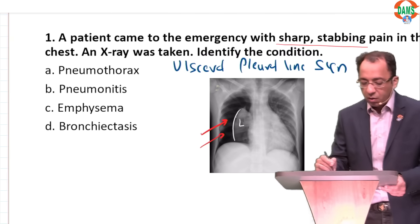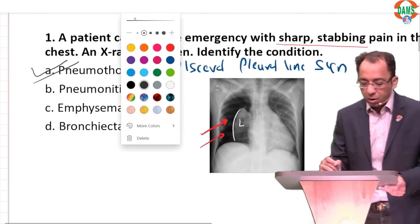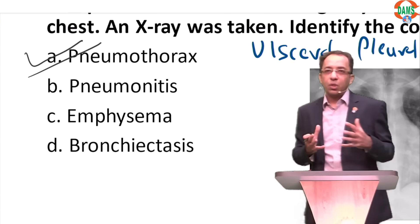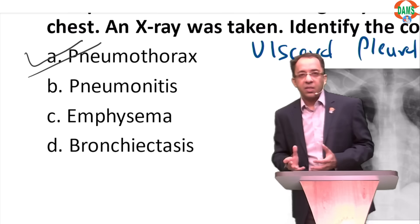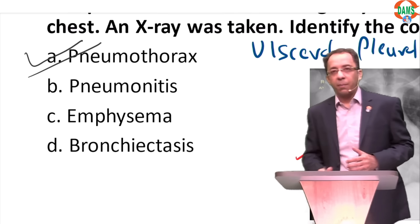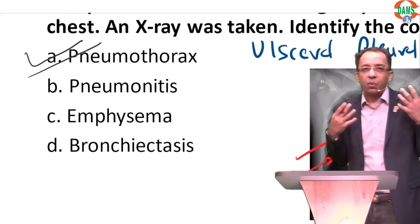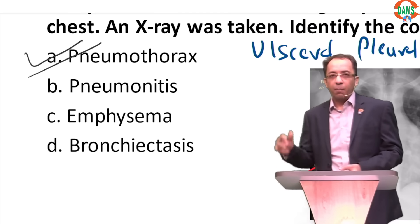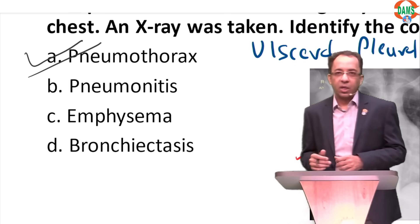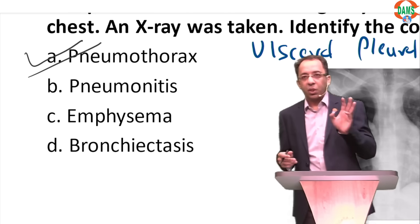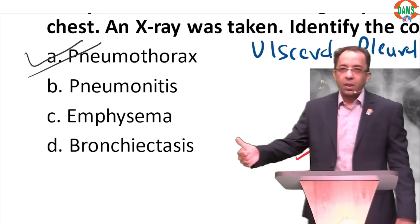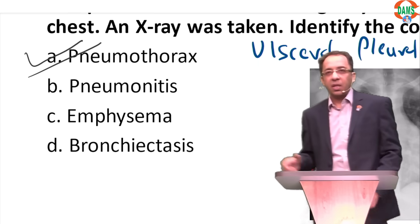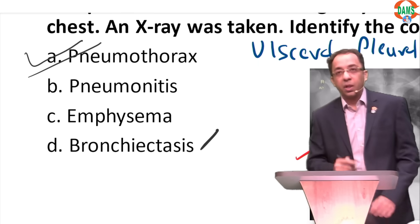If you see the visceral pleural line sign on a chest X-ray, suspect pneumothorax. Pneumonitis shows opacity with air bronchogram. In emphysema the lung is more black but you will not see the visceral pleural line sign. For bronchiectasis, remember three appearances: tram track appearance, signet ring appearance, and bunch of grapes appearance. These help rule out the other choices.